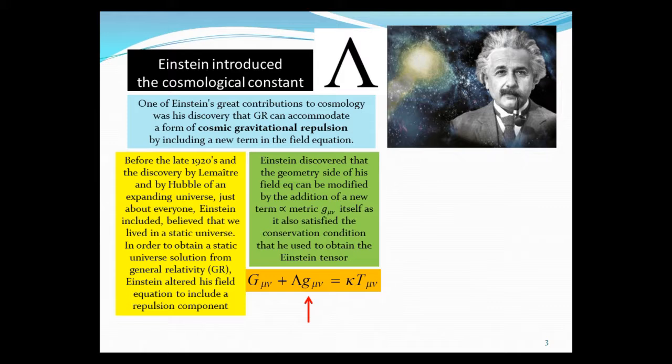We need symmetric rank 2 and satisfy the conservation conditions in order to arrive at the Einstein tensor. But the g_mu_nu itself actually has all these properties, so therefore it can be added to the geometric side with some constant lambda.